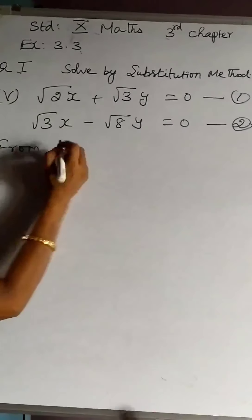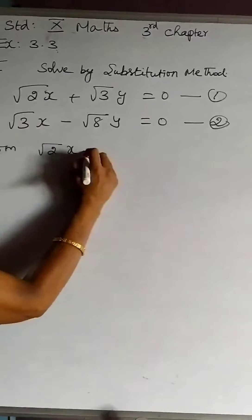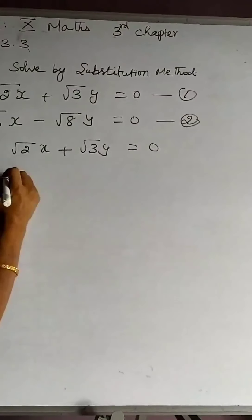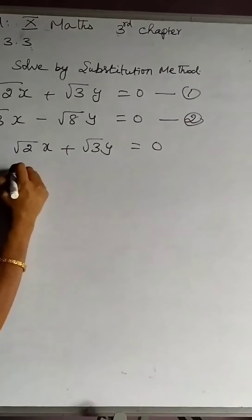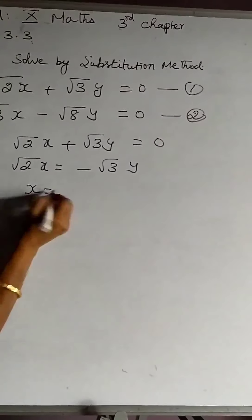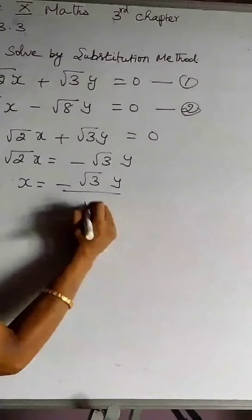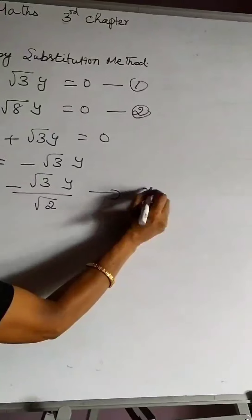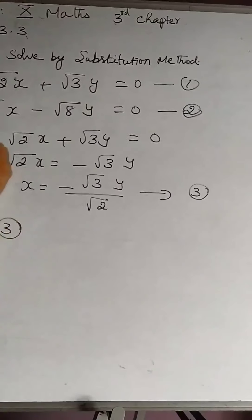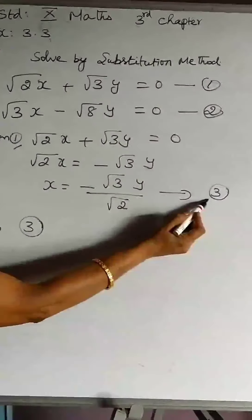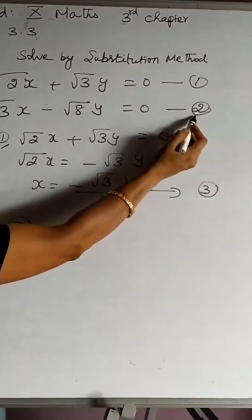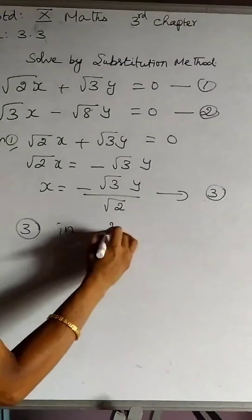From the first equation, √2·x + √3·y = 0, any one form can be found. Finding the x-form is easier here. Therefore √2·x = −√3·y, so x = −√3·y / √2. This is our third equation. We have used equations 1 and 3, so the left-over equation is equation 2, and this third equation must be substituted into equation 2.